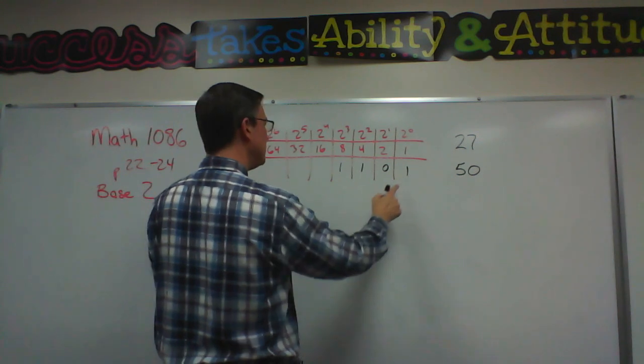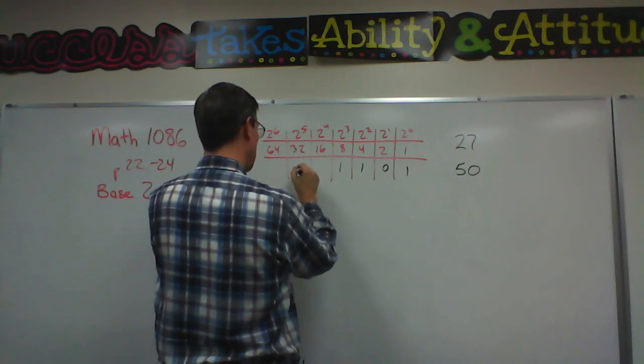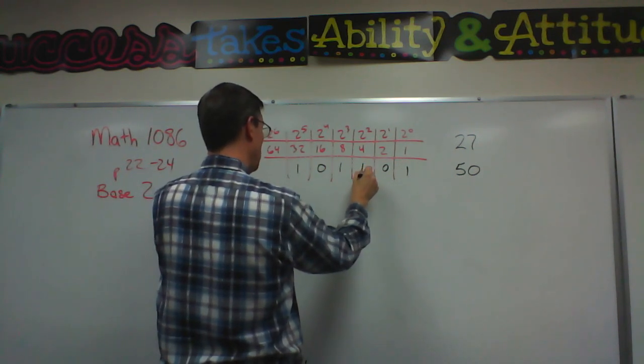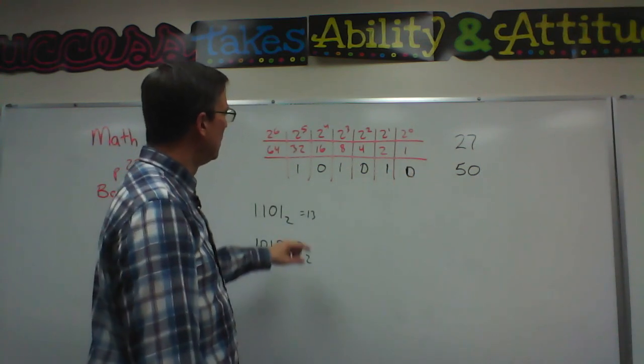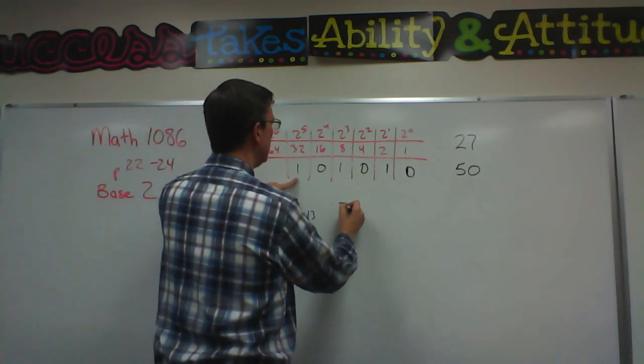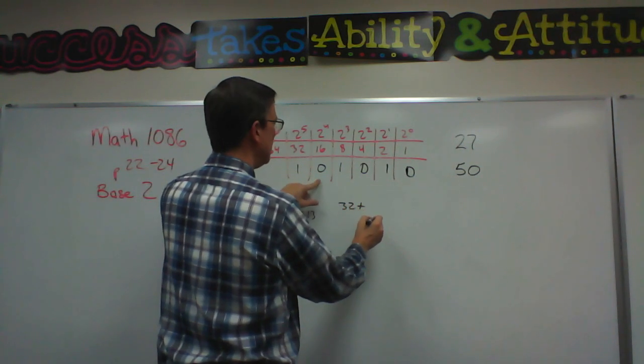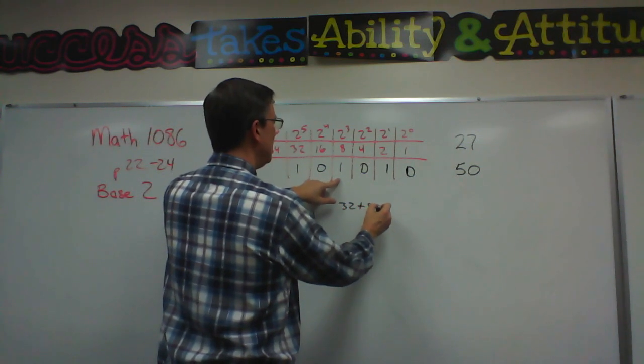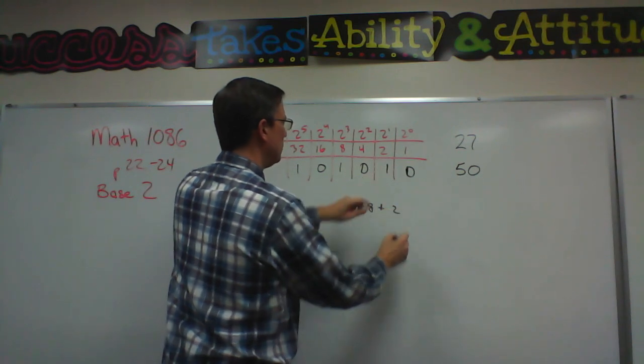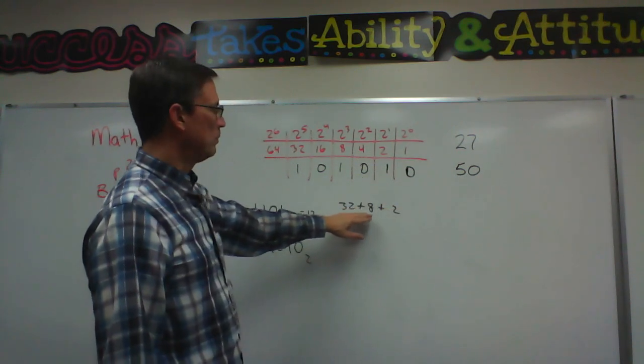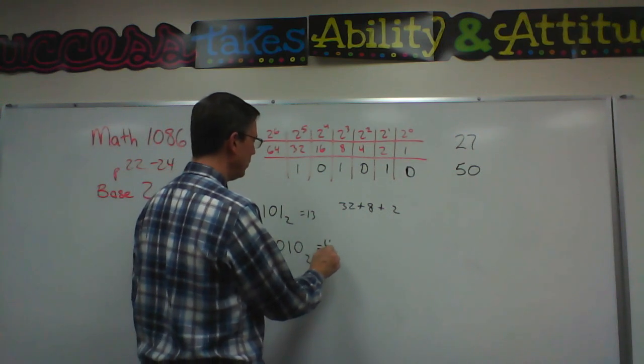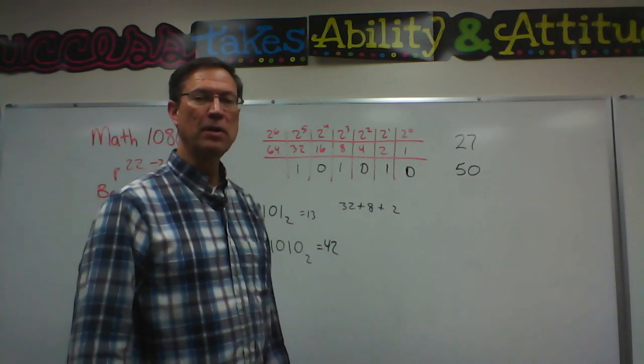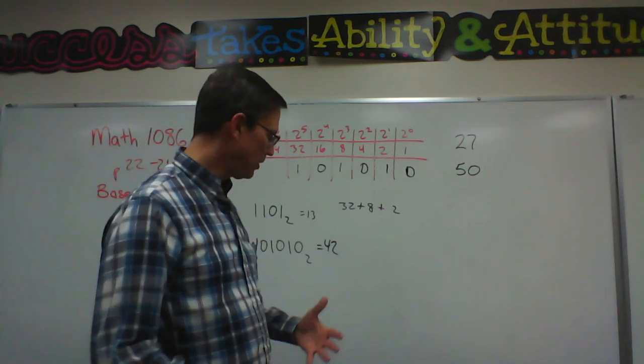So that's 1, 2, 3, 4, 5, 6 digits. We would add 32, not 16, plus 8, plus 2. 32 plus 8 is 40, plus 2 would be 42. Are you starting to follow that? Kind of catch on to that.